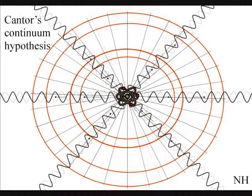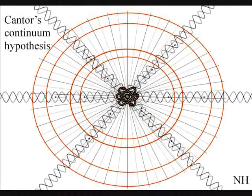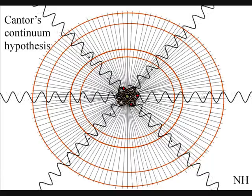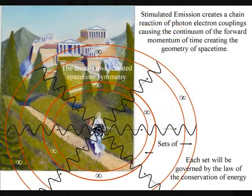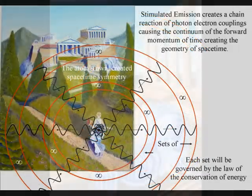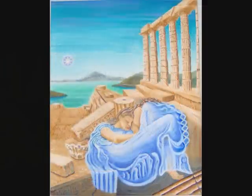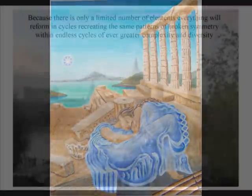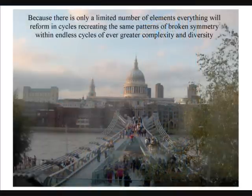This is because each atom is creating its own space-time geometry by the forward expansion of time that can always be divided into sets of infinities. But because there is only a limited number of elements, everything will reform in cycles.